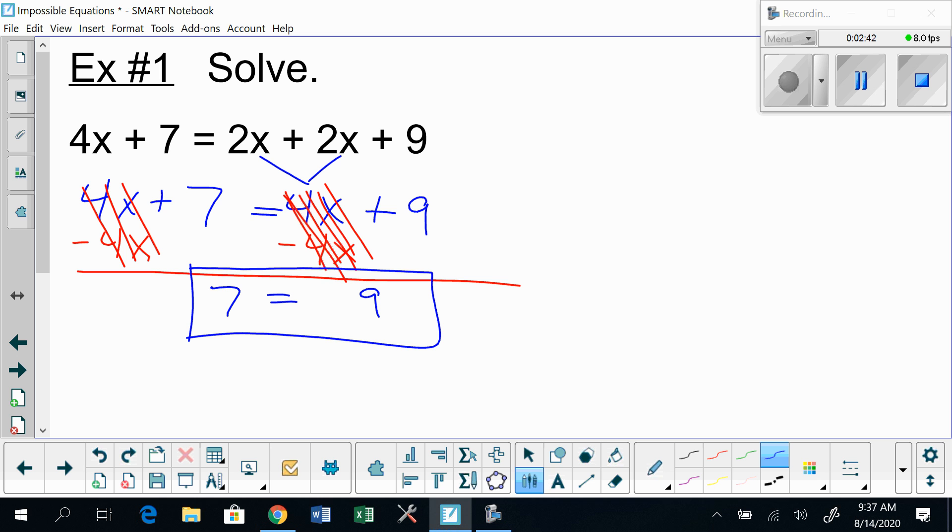And you're gonna decide if this is a true statement or a false statement. Seven does not equal nine. This is a false statement. And when this happens, anytime you're trying to solve an equation, it means there's no solution. We're gonna write the empty set notation. You could also write 'no solution' if you prefer. This is an equation that has no answer. There is no number you can plug in for x that would make this equation true.